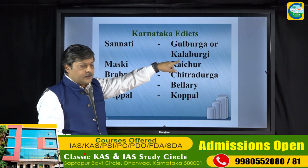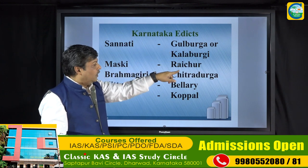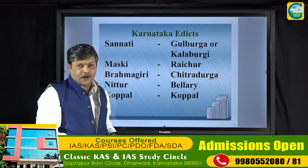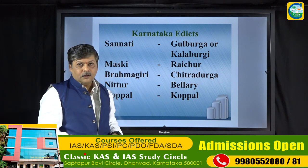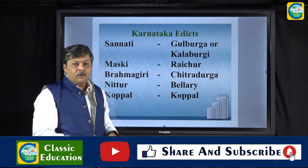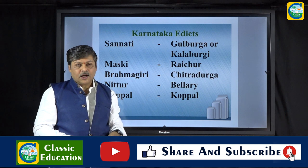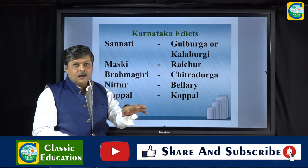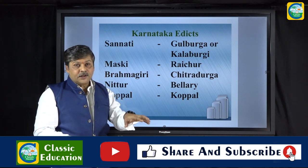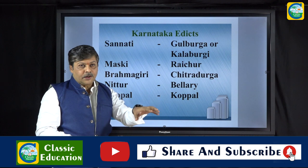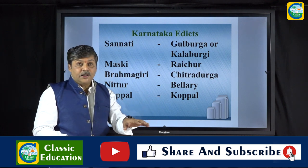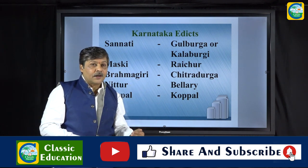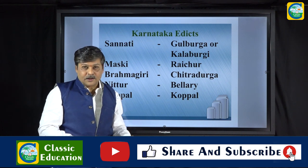Specifically coming to Karnataka — we have found Edicts of Ashoka in five districts: Gulbarga (today known as Kalburgi), Raichur, Chitradurga, Ballari, and Koppala. In these five districts we have found the Ashokan Edicts, which is an indication that Ashoka's empire expanded into Karnataka. The Mauryan Empire had expanded during the time of Ashoka to include this region.